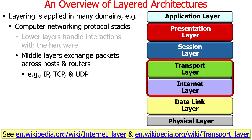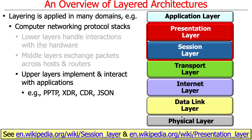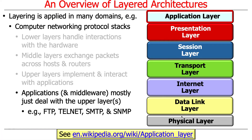The upper layer protocols — the application, session, and presentation layers — deal with how you interact with applications and encode data in a network-neutral way. There are binary encoding formats like XDR and CDR, and text-oriented formats like JSON or XML for sending data between different hardware and operating systems. The application layer is where the cool stuff really happens — dealing with user interaction, file transfer protocol, remote login via SSL, SMTP, and SNMP.